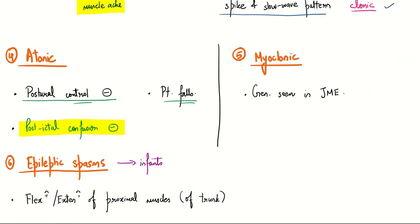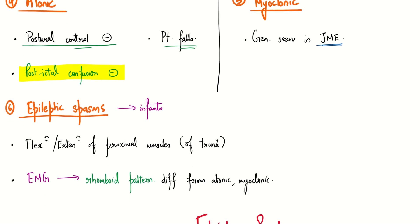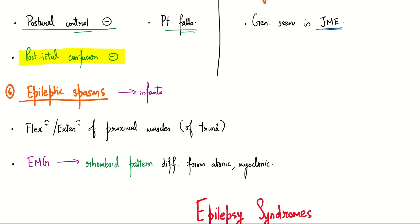We will move on to the last type, epileptic spasms, which is characteristically seen in infants. Here the muscles, preferably the proximal muscles, flex and/or extend. These are known as epileptic spasms. In the EMG (electromyogram), we will see a rhomboid pattern which is very characteristic and will help us differentiate epileptic spasms from atonic and myoclonic seizures.